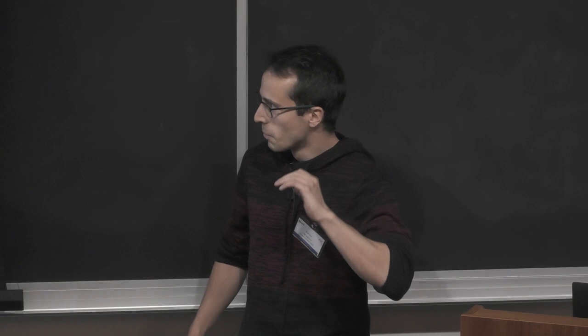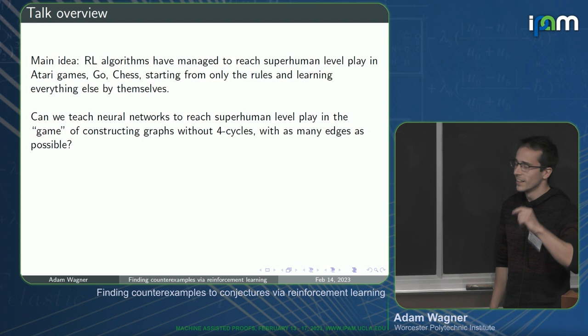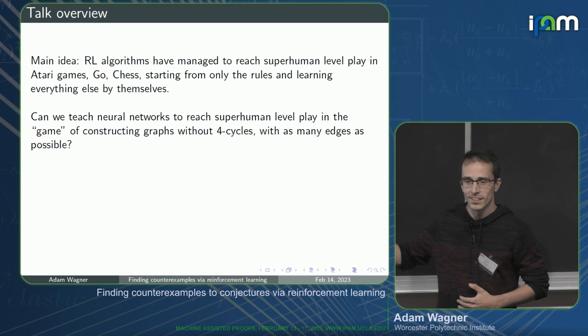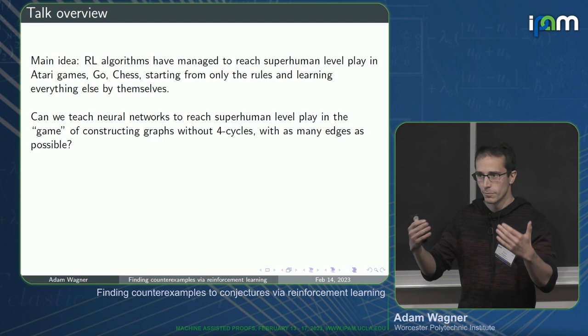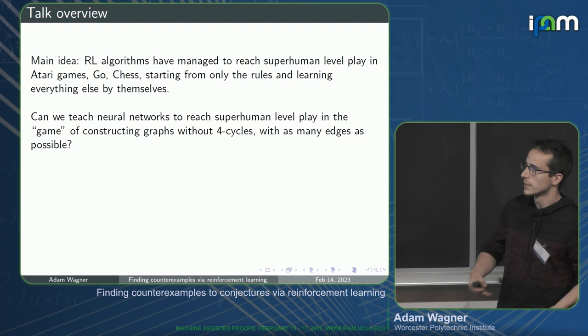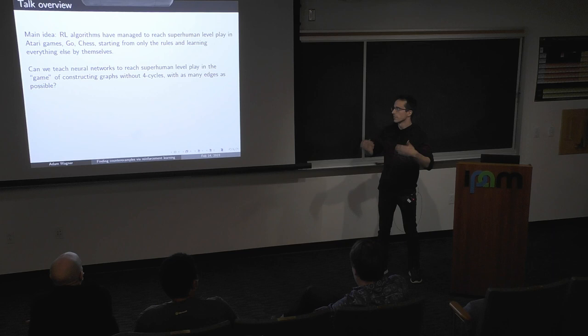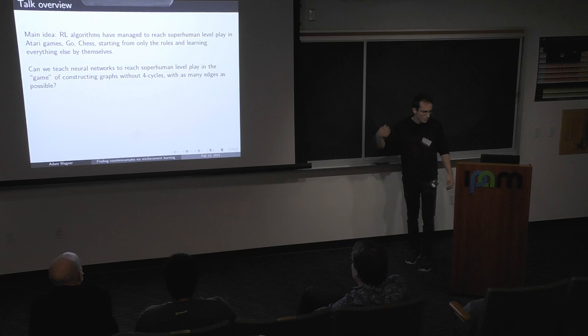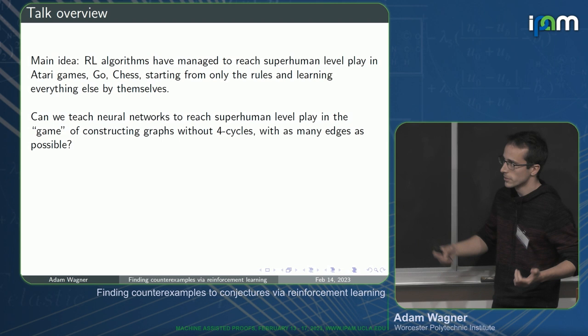As an example, let's imagine inputting the rules of a game where the goal is to construct a graph with as many edges as possible but without any cycles of length four. You have a player and you start offering each edge of an n-vertex complete graph one by one. For each edge, the player decides whether to include it or reject it. Once all decisions are made, we give feedback: one point per included edge, but a hundred-point penalty for each four-cycle created.